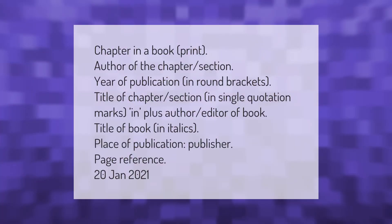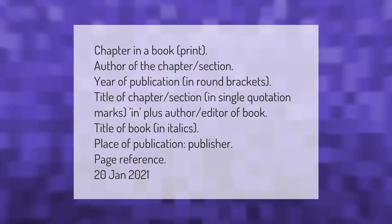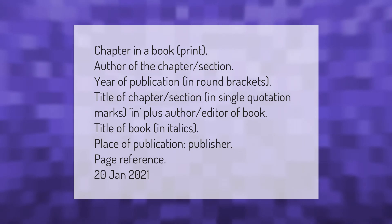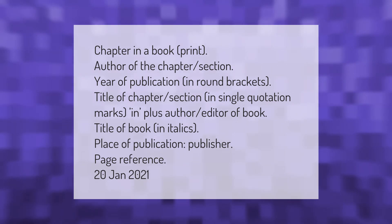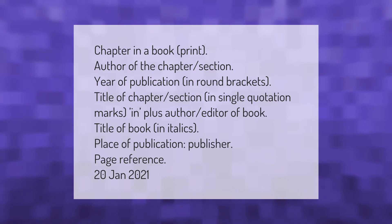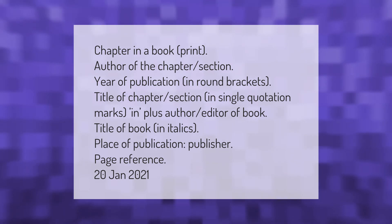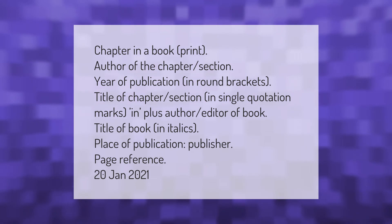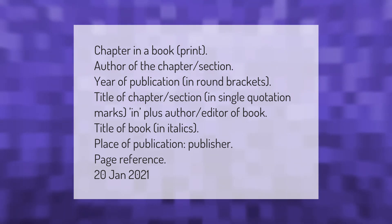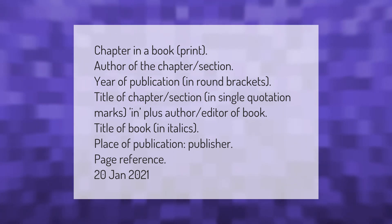For a chapter in a book (print), include: author of the chapter or section, year of publication in round brackets, title of chapter or section in single quotation marks, 'in' plus the author or editor of the book, title of book in italics, place of publication, publisher, and page reference.